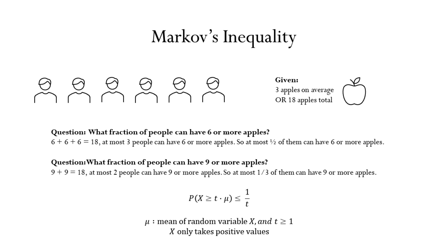It turns out that the maximum number of people that can have six or more apples is three. In this case, three of them will have six apples each and the remaining three will have zero apples. So that's half of all people that could have six or more apples.